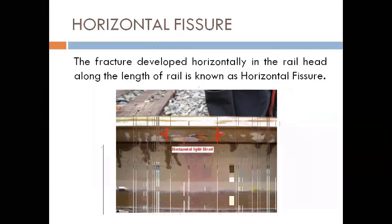Next is horizontal fissure. A horizontal crack along the length but on the side of the rail is called a horizontal fissure.